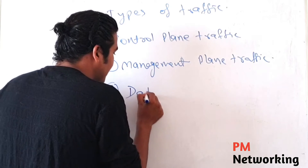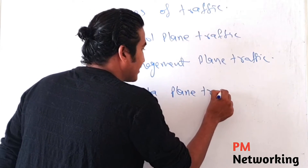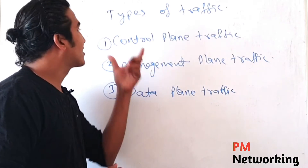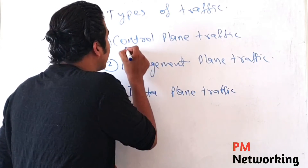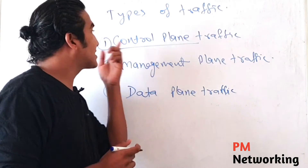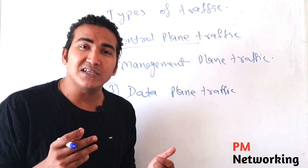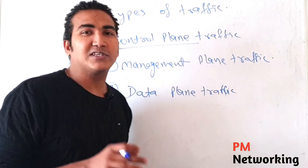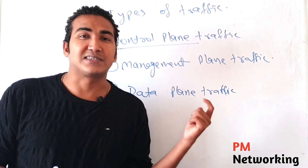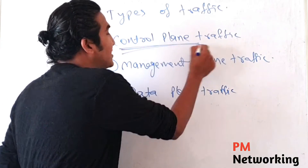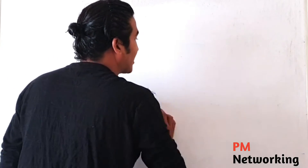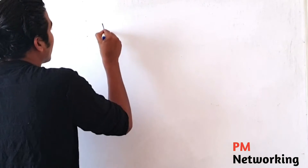So what is control plane traffic? As you can see from the name 'control plane,' this traffic is used to control the device. Control plane traffic is the traffic which is generated by a device for another device. A device is generating traffic for another device — that type of traffic is known as control plane traffic. Let me give you an example to make this more clear.